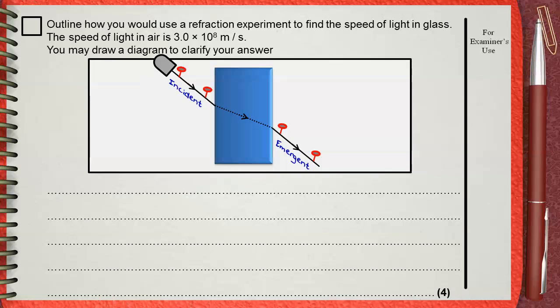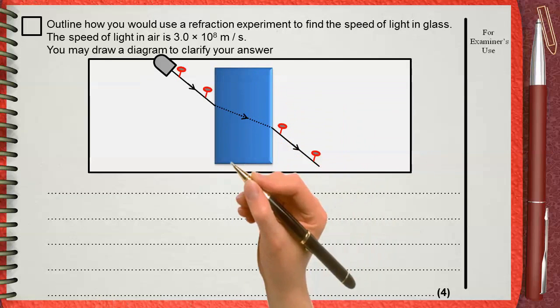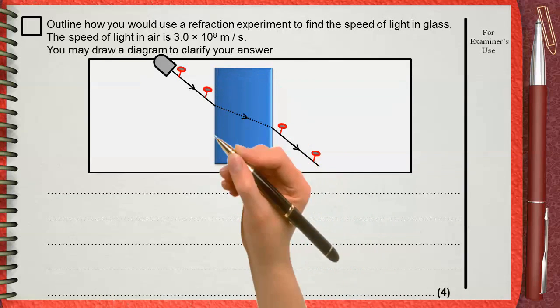But what we are going to do now is that we will draw an outline of the block to define exactly its place. Now we are ready to remove everything.